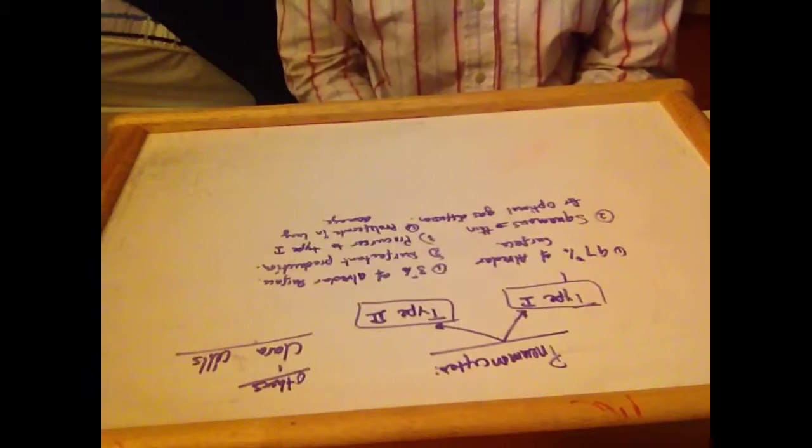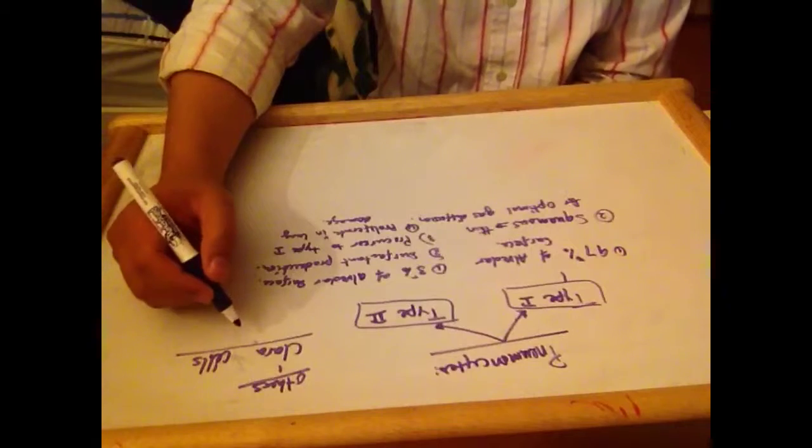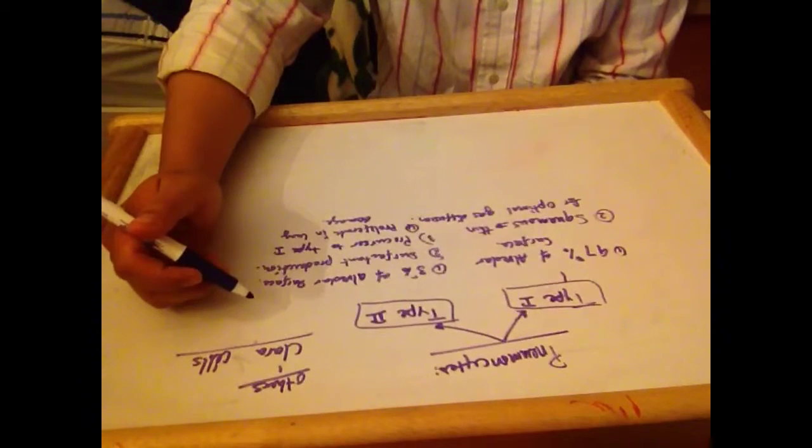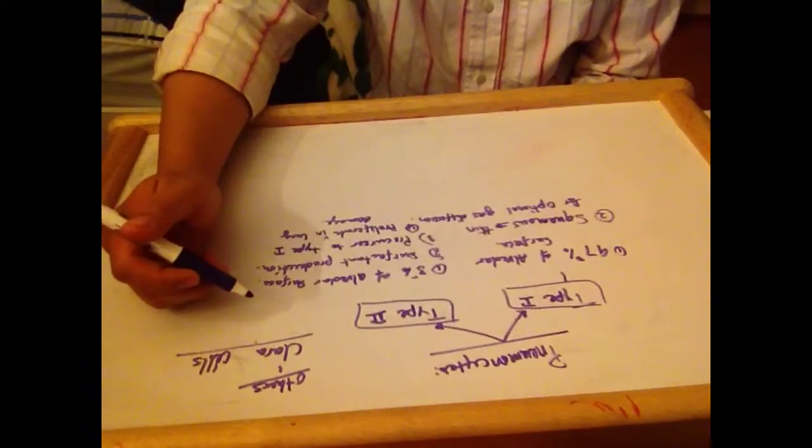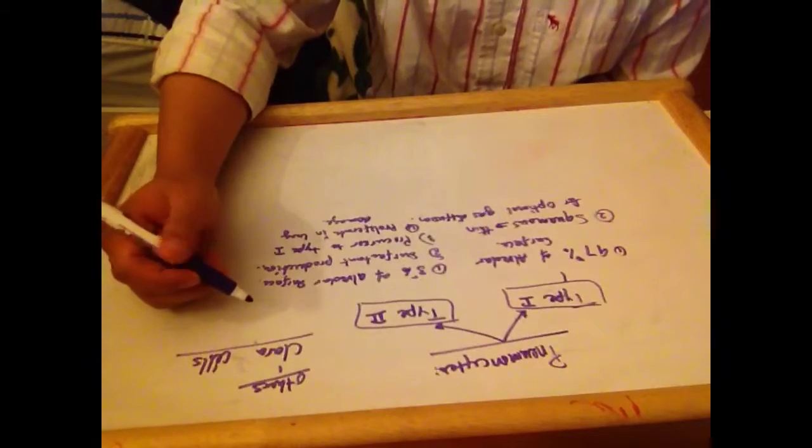The other cells are Clara cells. Clara cells are non-ciliated columnar with secretory granules. They secrete components of surfactants, degrade toxins, and act as reserve cells.